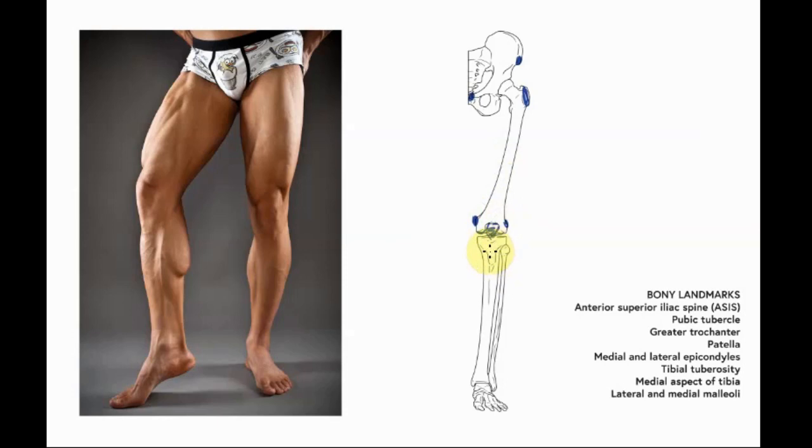Then we come down to the tibial tuberosity. This will be that little bump you can feel at the anterior and proximal end of the tibia, and that leads into this medial aspect of the tibia. This surface that's only got a little bit of skin covering it, it's very exposed. It's what we feel of our shin bone coming down here and terminating distally at the medial malleolus on this side.